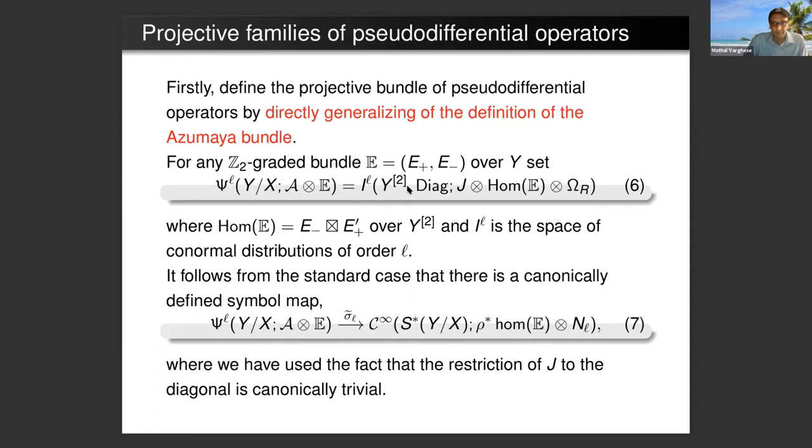This consists of distributions on Y squared which are conormal. What this means is you take distributions and you hit it with vector fields which are tangent to the fiberwise diagonal, and distributions are in some Sobolev space. But if you hit it with vector fields which are tangent to the fiberwise diagonal, then you don't change the order. These are called conormal distributions.